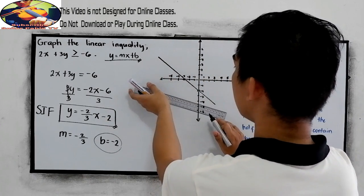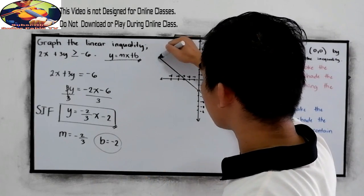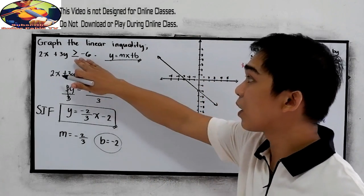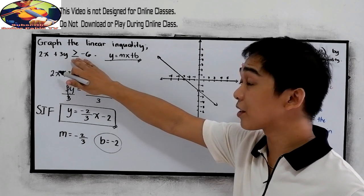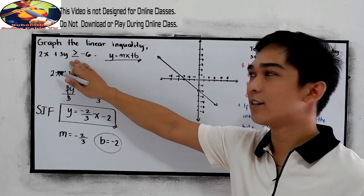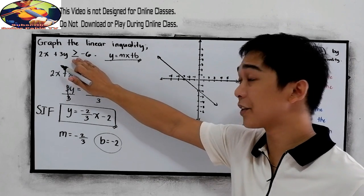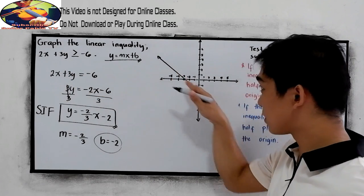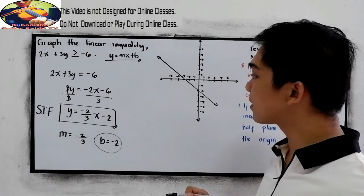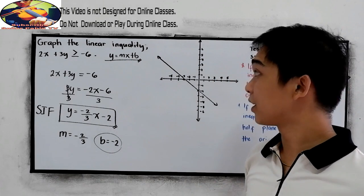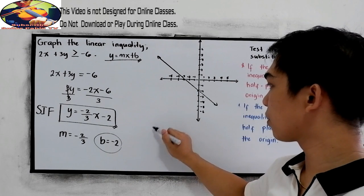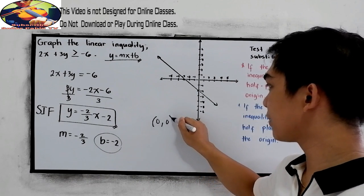So this will be the line. We're going to use the straight line, not the broken line, because in our inequality we have greater than or equal. Take note of that — if you encounter the equal sign, it must be a solid line, not a broken line. Now let us test the origin, (0, 0).